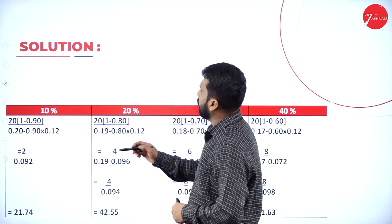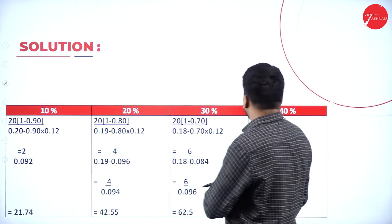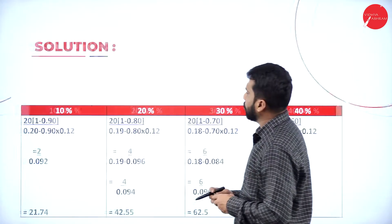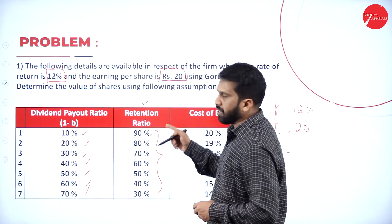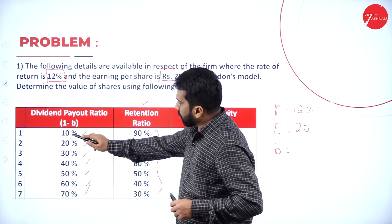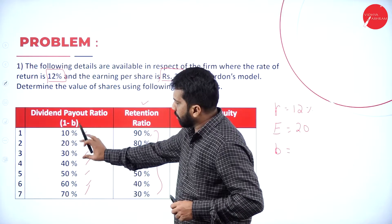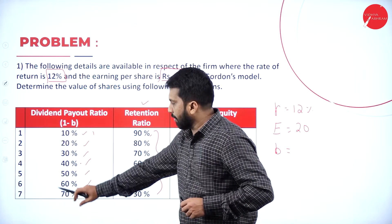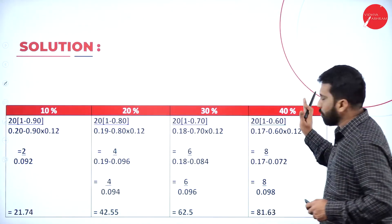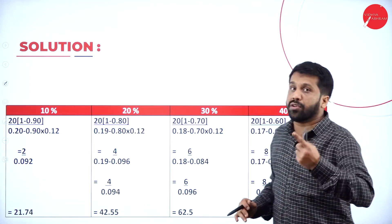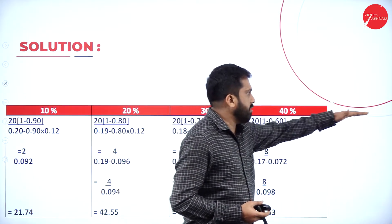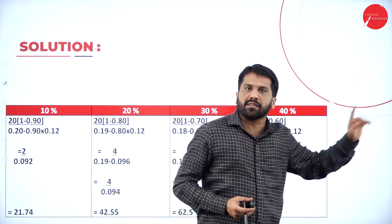Hope you are clear. These are the informations we have. We will take only the first four payout ratios — 10%, 20%, 30%, 40% — for now, because of space. Later we will come back for 50%, 60%, and 70%. You can do the continuation. In a single row, you can do all seven calculations.